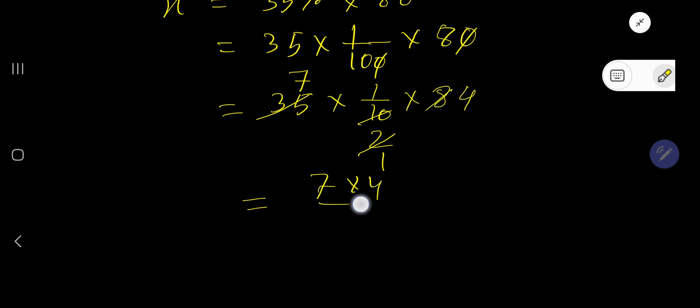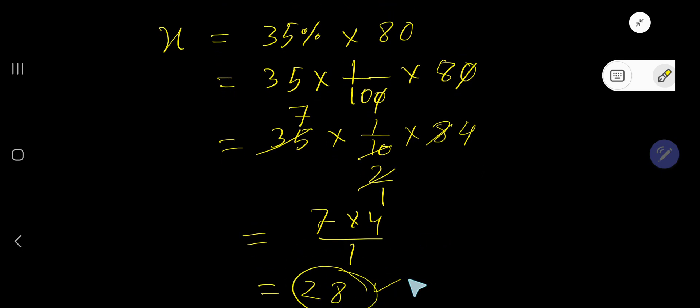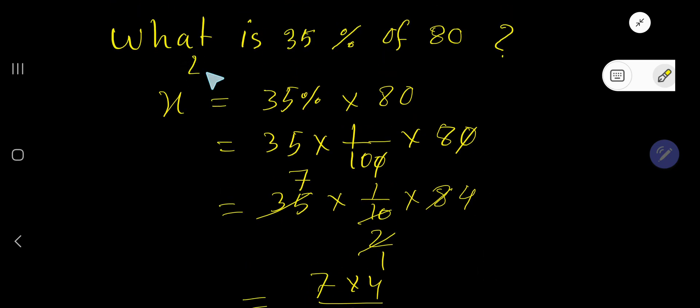Divided by 1, that is 21... that is 28, right. So 28 is 35% of 80.